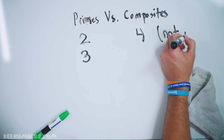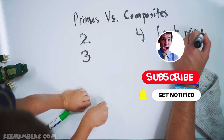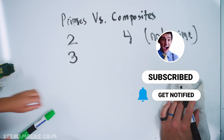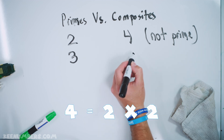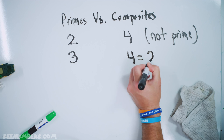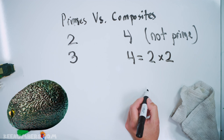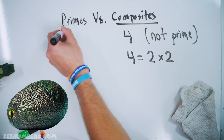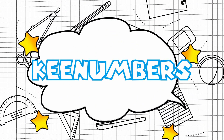Why is four not prime? There's an easy answer to that. Because four can be divided up, can't it? Four is equal to two by two. So four is a composite — it is not a prime number.